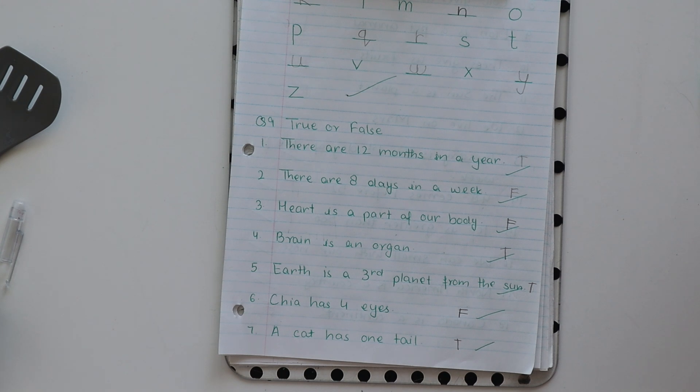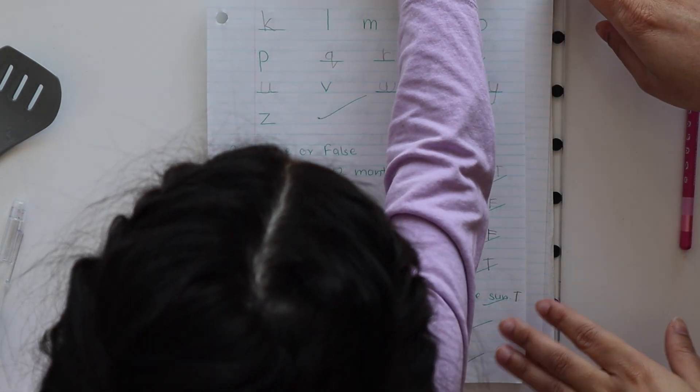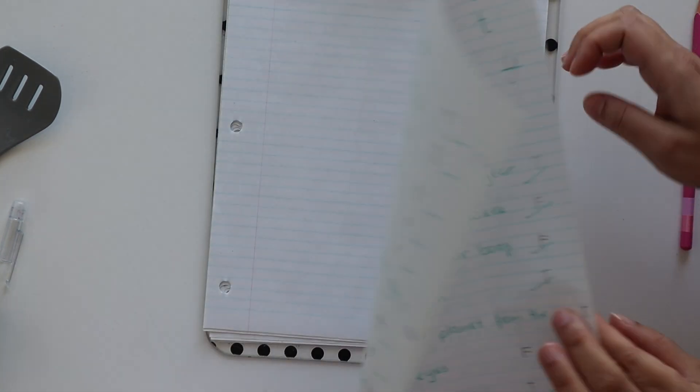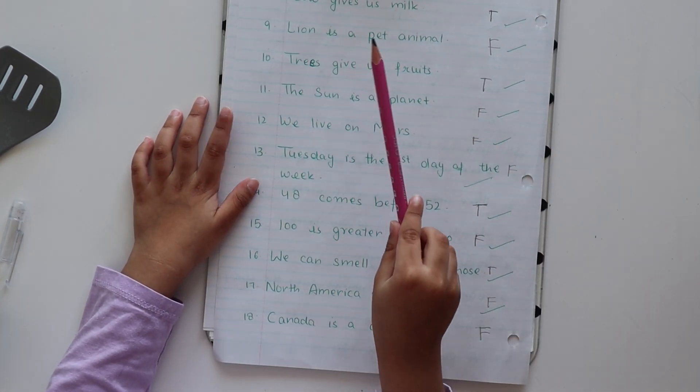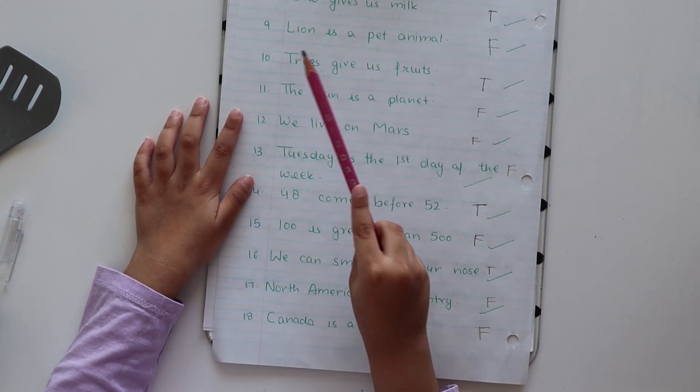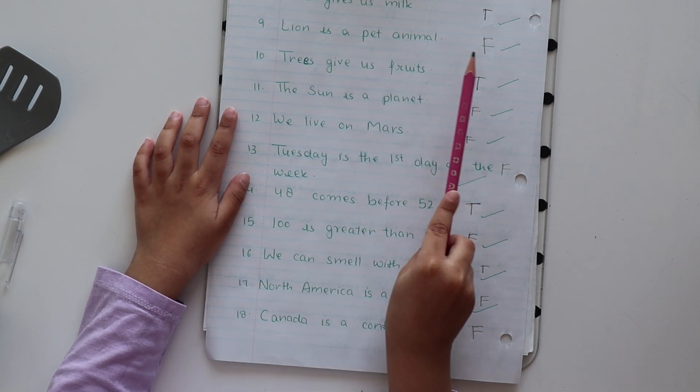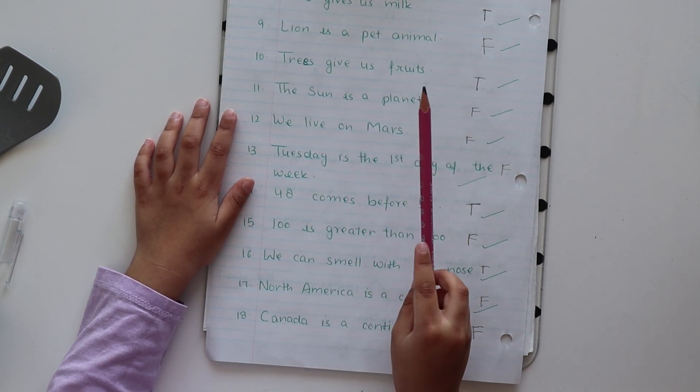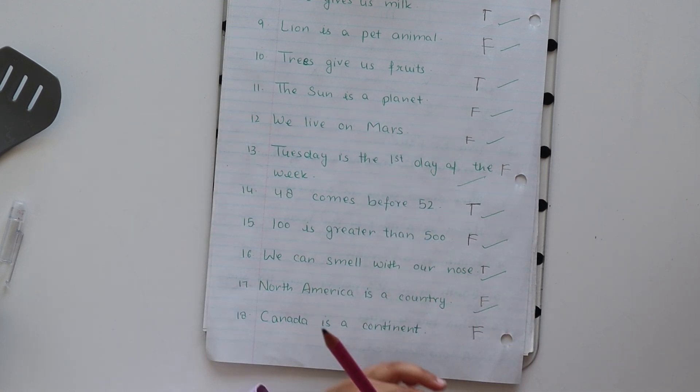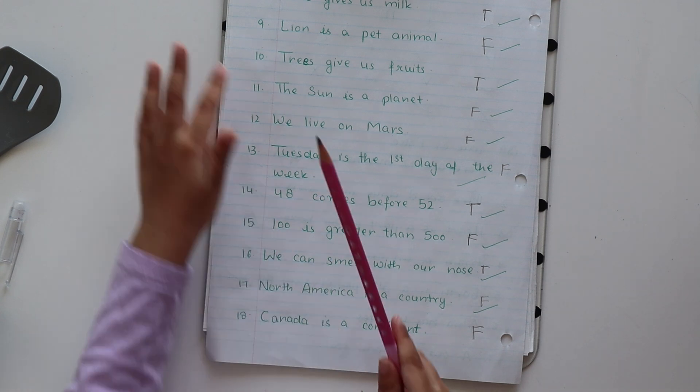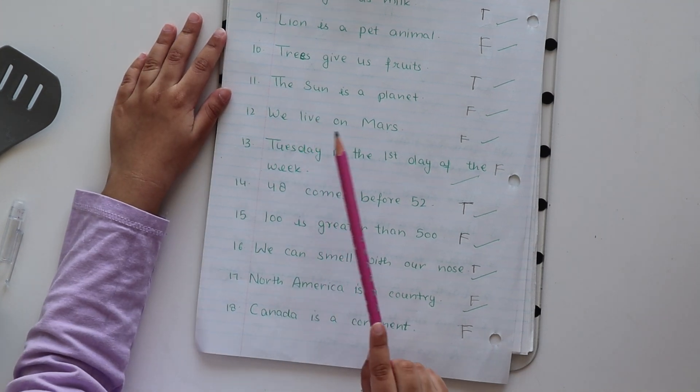A cat has one tail. At the back. Is it true or false? True. Next. Cow gives us milk. True. Nine is a pet animal. False. Trees give us fruit. True. The sun is a planet. False. Why? Why it's false? Because it's a star. Very nice. Sun is a star. We live on Mars.